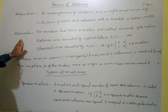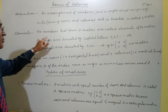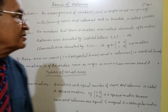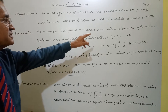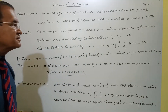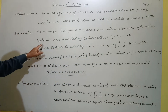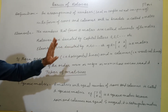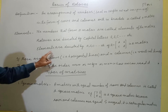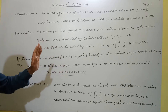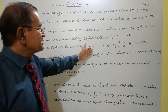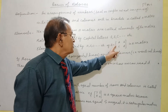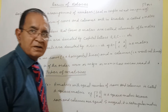Elements: the numbers that form the matrix, we call those numbers as the elements of the matrix. Matrices are denoted by capital letters A, B, C, D. Elements are denoted by small letters a, b, c. So as in the example: capital A means this is the matrix; small a, b, c, d — these are the elements.